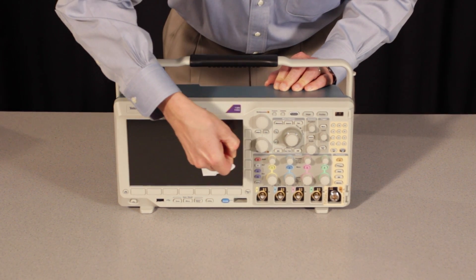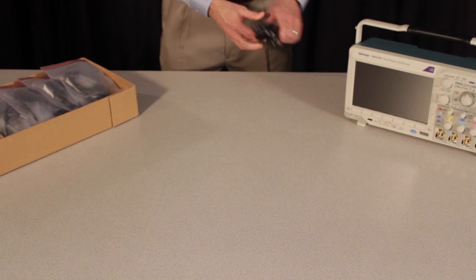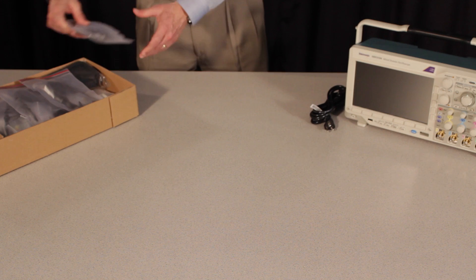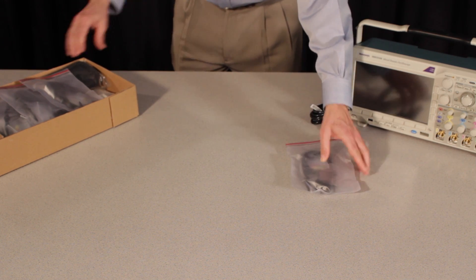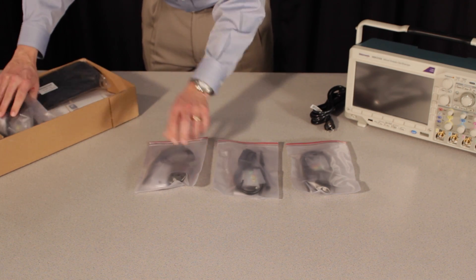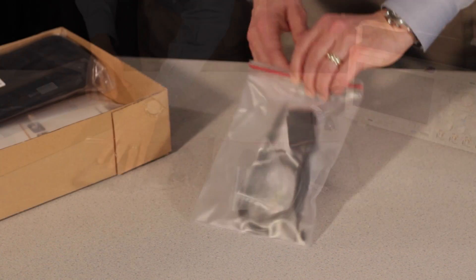Now let's see what comes with the instrument. Naturally a power cord, passive probes, one for each analog channel. The one gigahertz MDO models come with one gigahertz probes. The other models come with 500 megahertz or 250 megahertz probes.